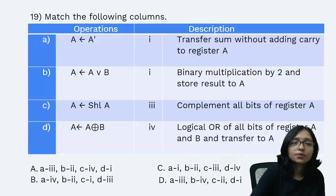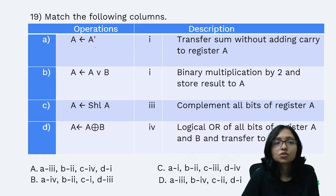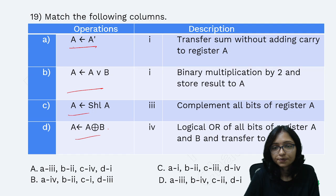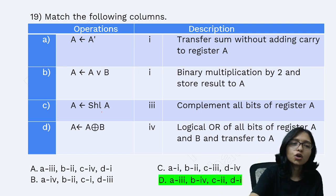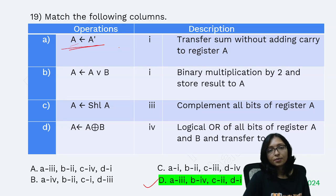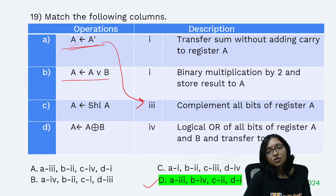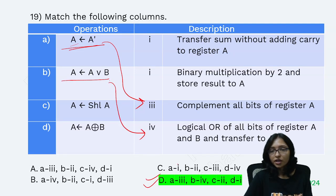For the operator matching question: operator A performs complement, so it matches with option 3. Operator B performs all operations (universal), so it matches accordingly. These are the correct pairings for the given descriptions.